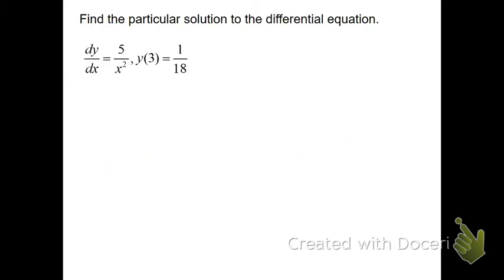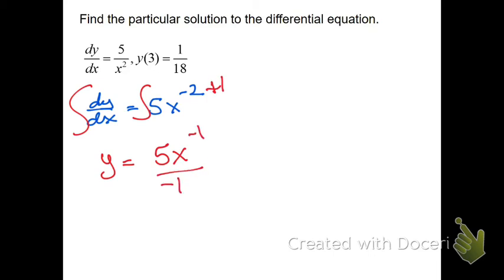Now this one I chose on purpose. Look how similar this original problem looks to that last one. The difference is that last one was an x to the first. If it's anything other than an x to the first, and if it's an x squared or anything else, it's just a power rule. So move it up. Rewrite it as 5x to the negative 2 and just do a simple power rule. Integrate both sides and you get y equals 5x to the add 1 and you get negative 1 and divide by that result plus c.